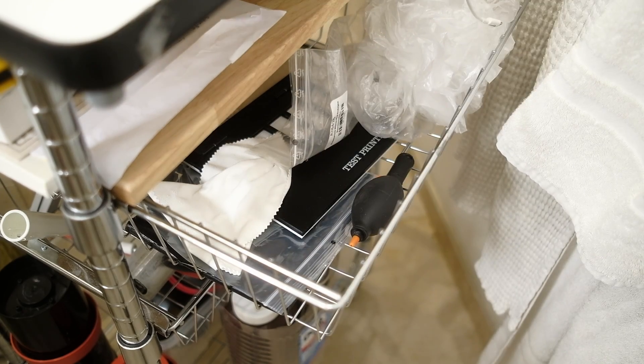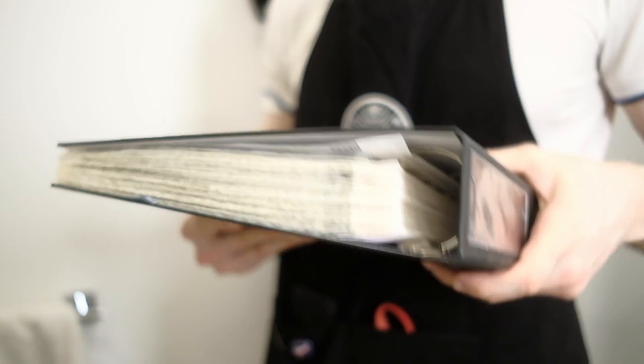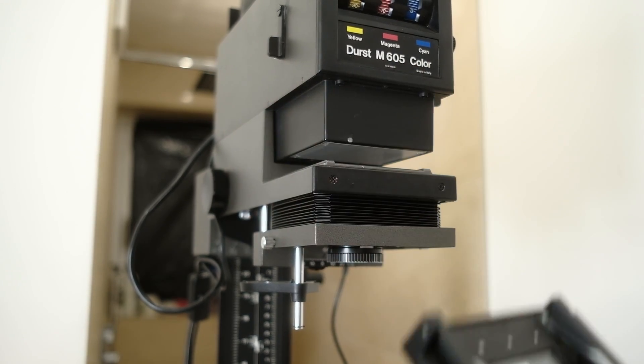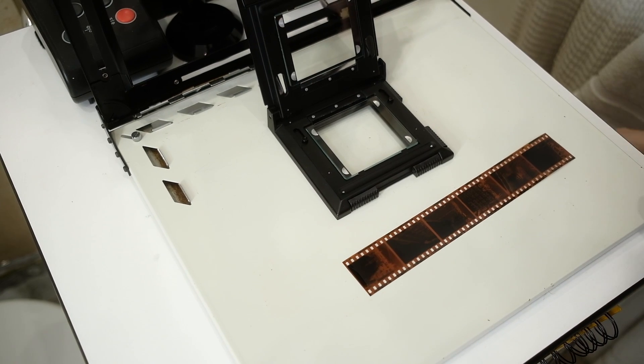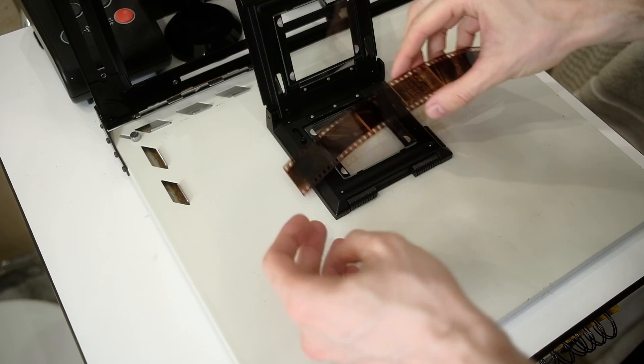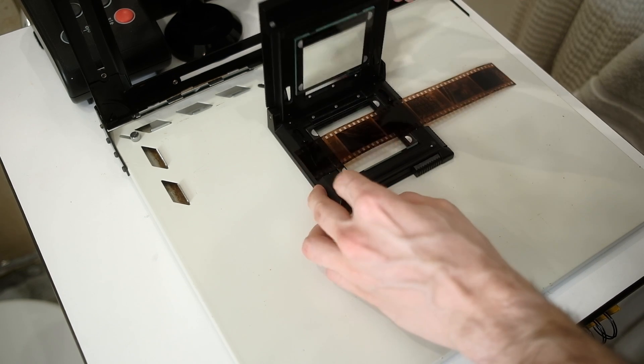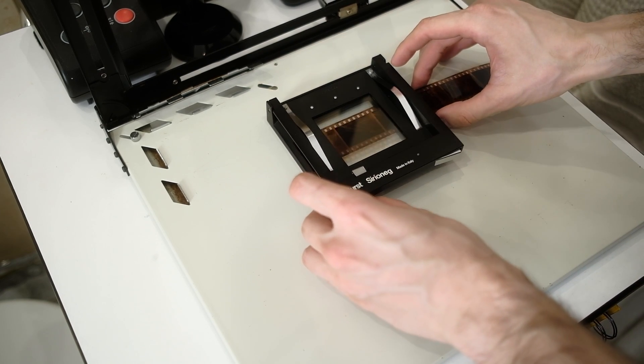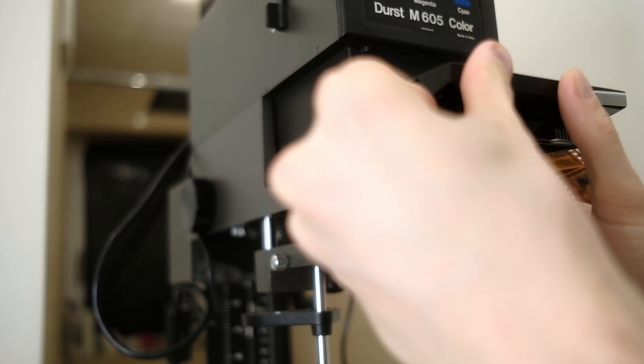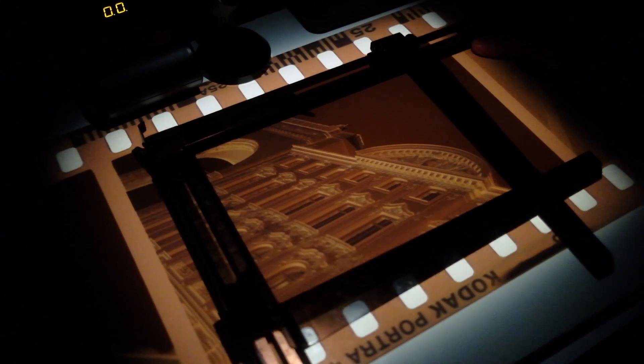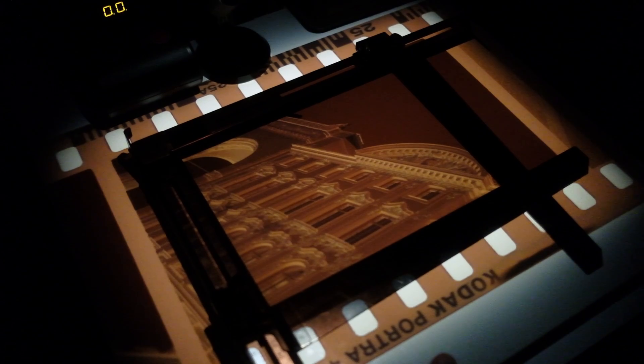So let's go to the darkroom. Today's negative is Portra 400, shot with a Leica M4 II and 50mm lens. This is nice evening light, so let's frame it up and continue with the calibration.